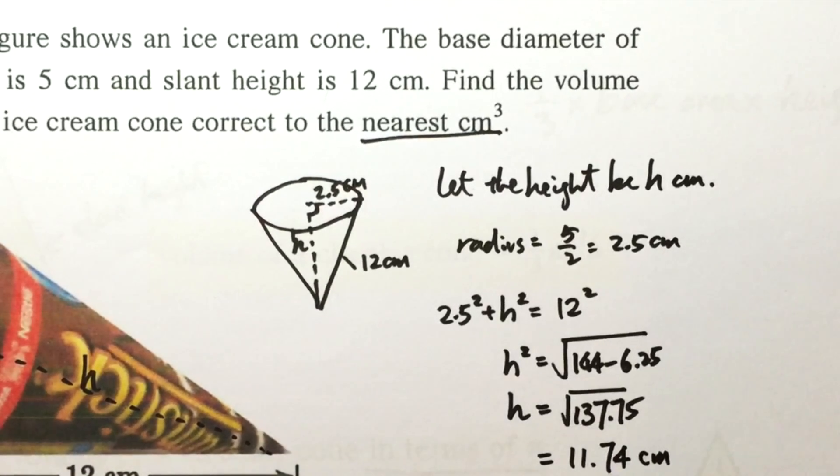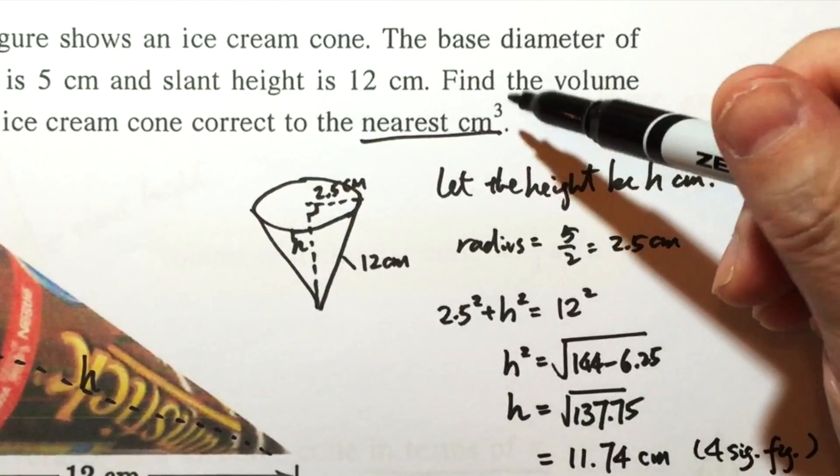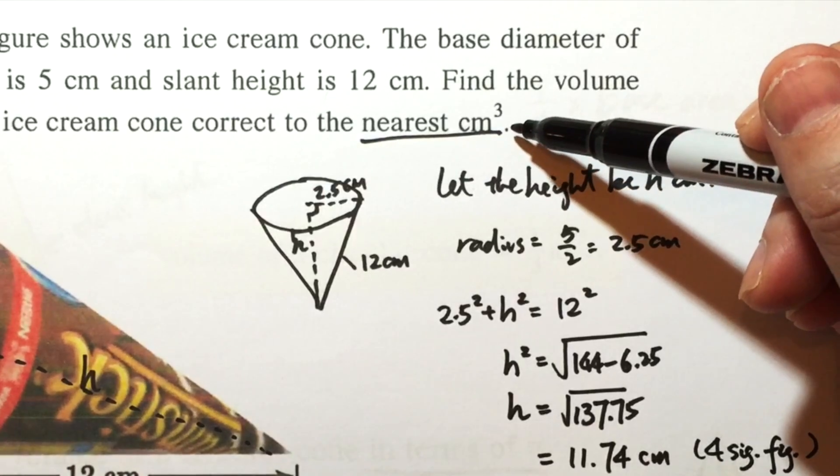So usually we record the intermediate answer with more than one significant figure. We use four significant figures here, even though the final answer just needs to be to the nearest cm³.